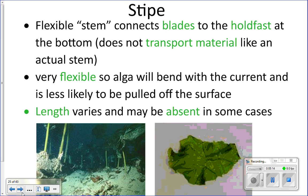The stipe looks like the stem of algae but it's not actually a stem — a stem has structures to transport nutrients from roots up to leaves, and the stipe does not transport anything. It is simply a connector between the holdfast and the blades. It is also very flexible so that when waves come, the algae can bend with the waves and currents and not break off.